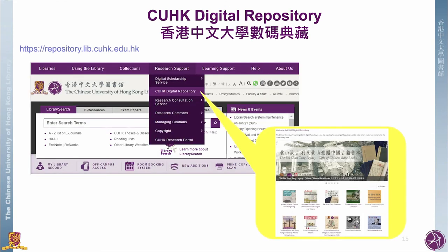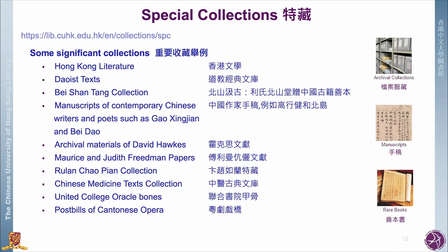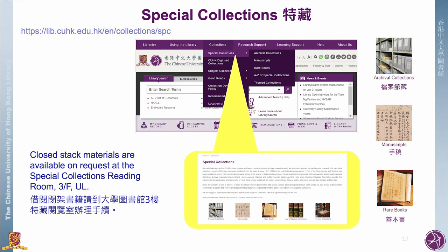Special Collections at the CUHK Library houses rare books, manuscripts, and archival materials, which are important sources for teaching and research. Our rare book collection consists of Chinese and Western rare books and a collection of oracle bones. The archival collections contain both manuscripts and archival materials. On screen you can see some of the significant collections. If you would like to access closed-stack materials from our Special Collections, you can request access at the Special Collections reading room at the University Library.